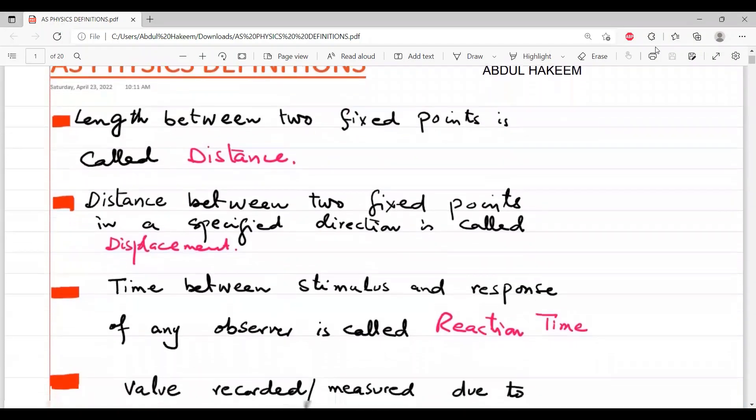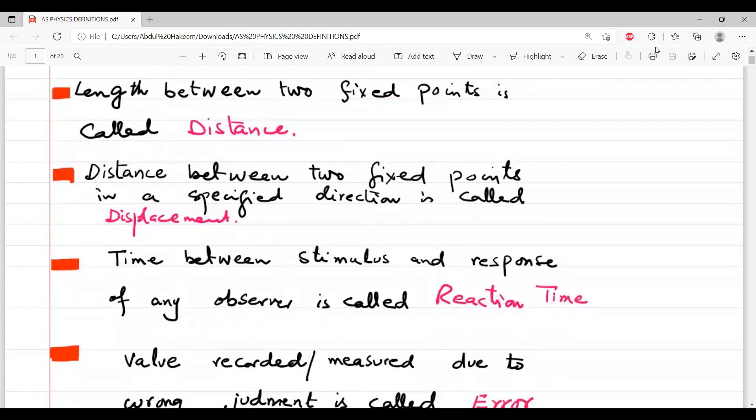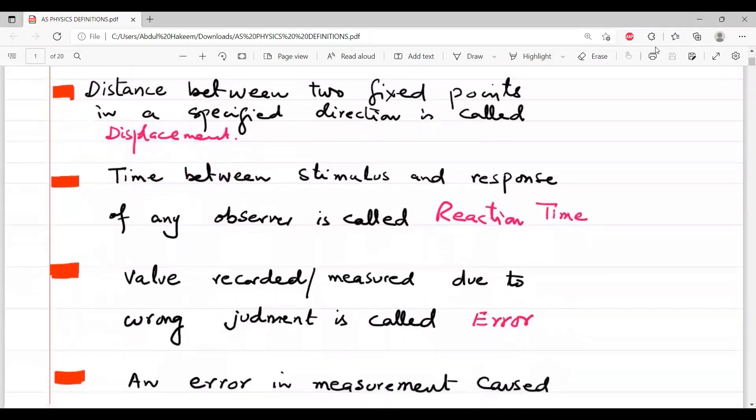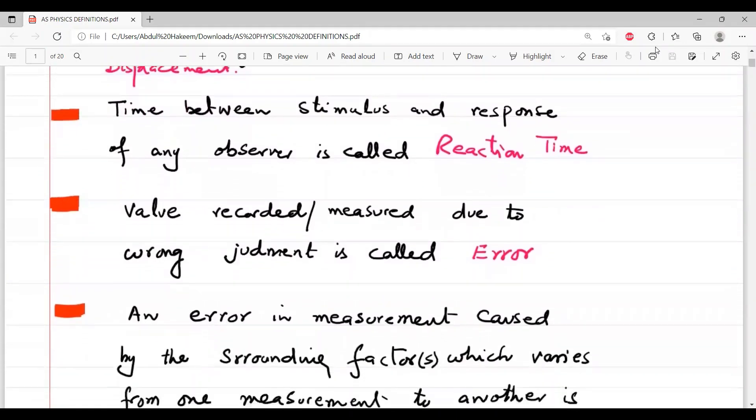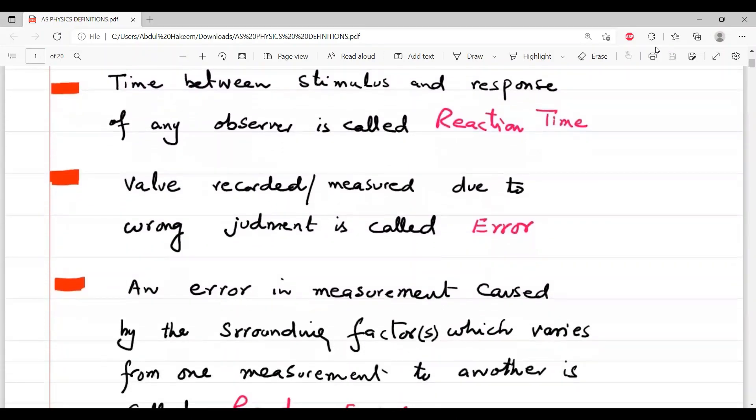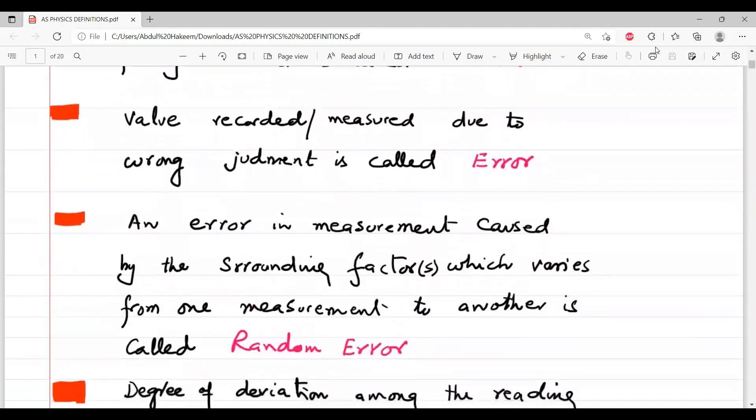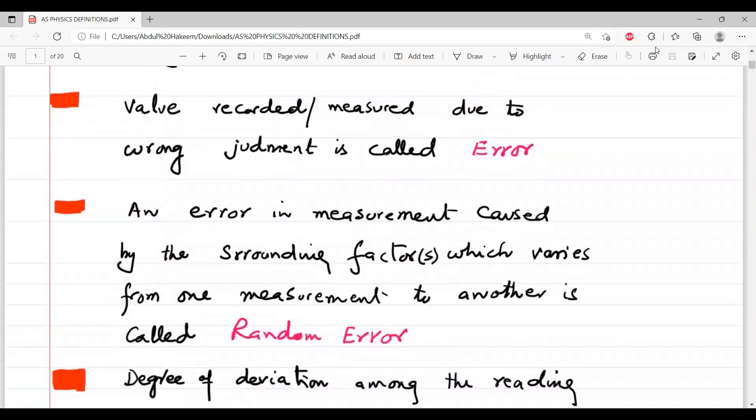First for the distance, second for the displacement, third the reaction time, then error, next is the random error.